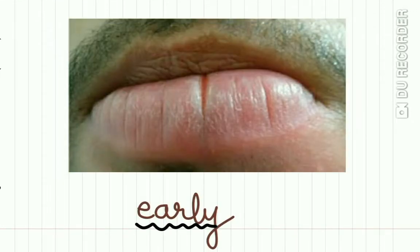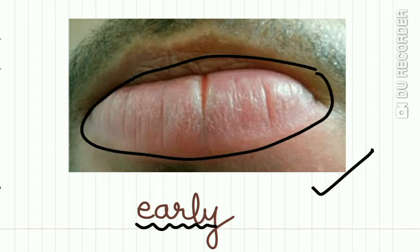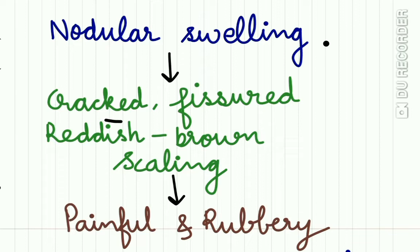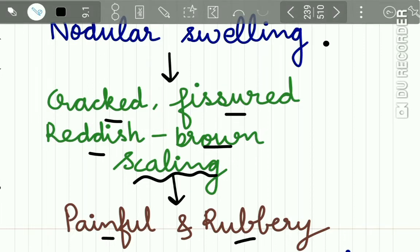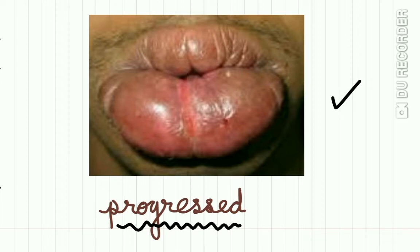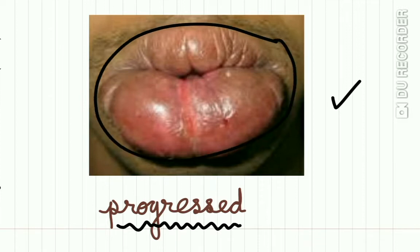This pictorial representation shows the early manifestation with a diffuse swelling involving the lower lip. Over time, this nodular swelling undergoes cracking and fissuring, a reddish-brown discoloration appears, and scales form on the surface — leading to pain and a rubbery consistency. The diagrammatic representation of cheilitis granulomatosa shows cracks, fissures, and scales on the lips.